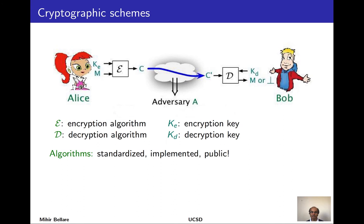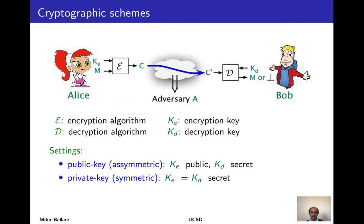So the process by which you encrypt is not going to be secret. If that's the case, how can you possibly hide anything? The answer is that the keys are present and these keys can be secret. So we look to these keys as being the source of security when used properly in the presence of public algorithms.